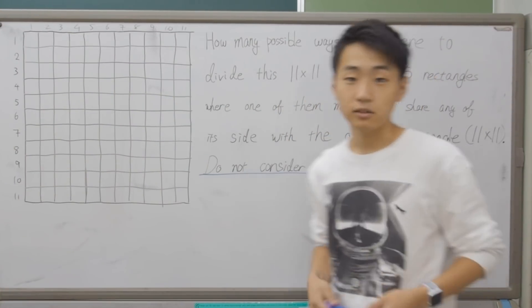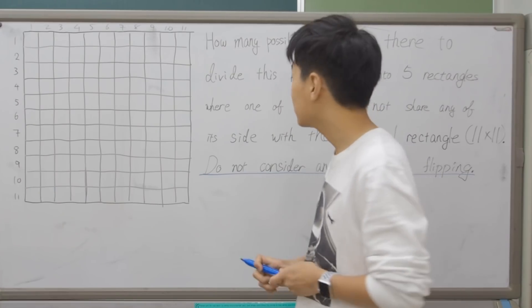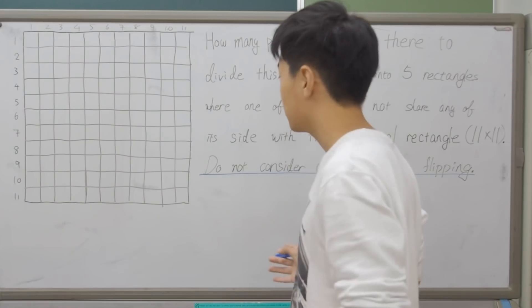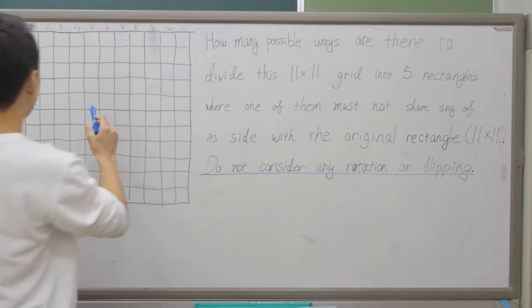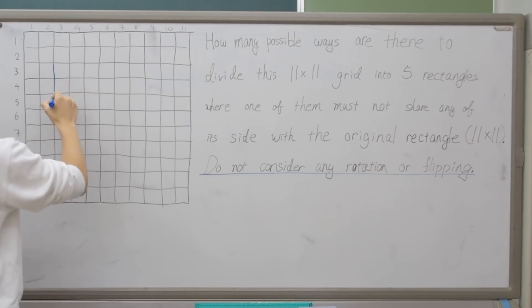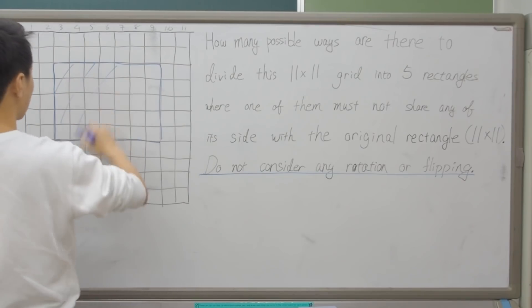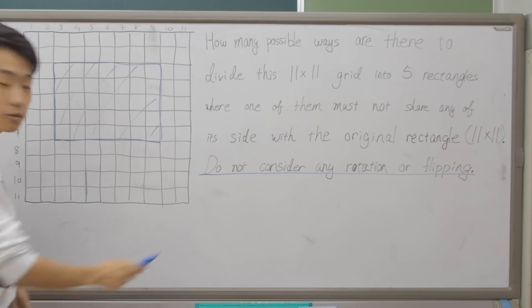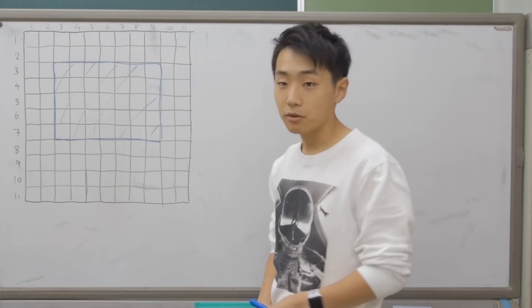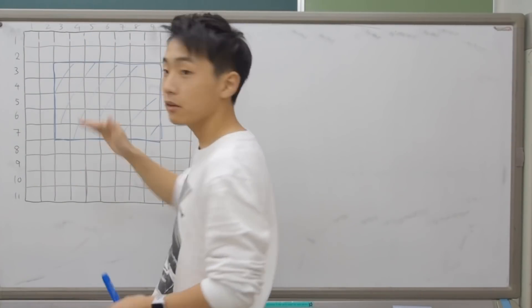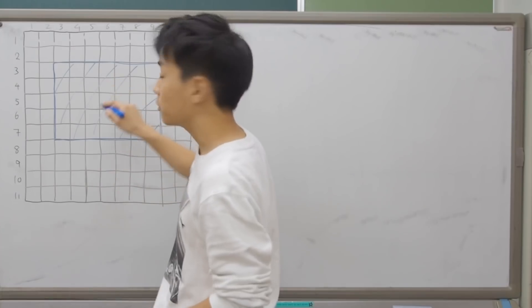When I took this test, in this kind of pattern counting problem, I often go ahead and visualize what the question is looking for. As it says, the rectangle that doesn't share any side with the original — so you just think, how about this one here? This rectangle here does not share any side with the originals, right? Counting how many such rectangles can be made within this 11×11 grid is fairly simple.